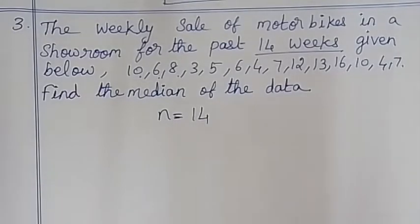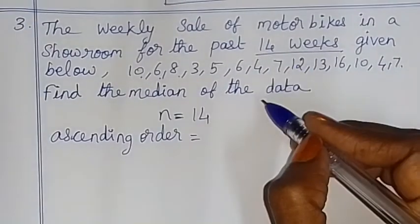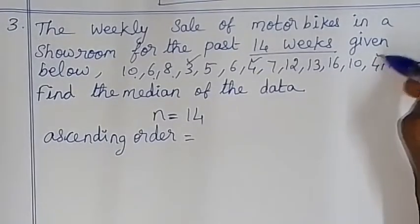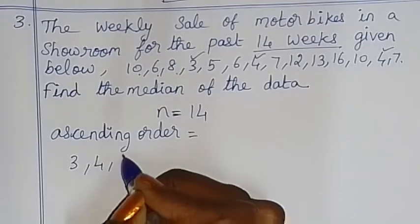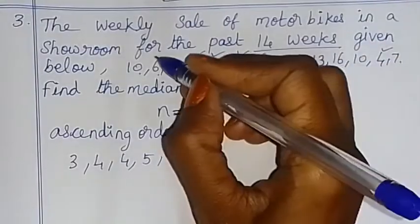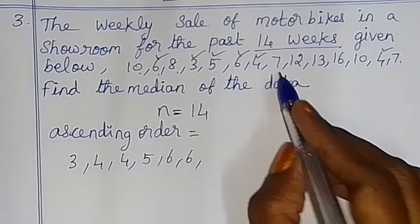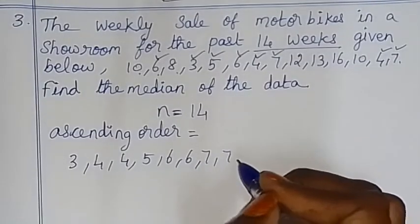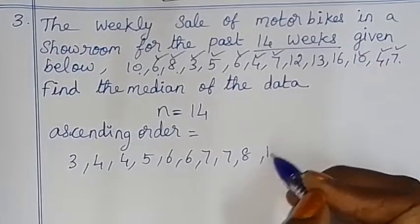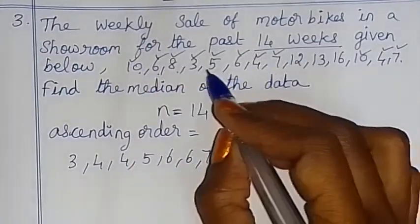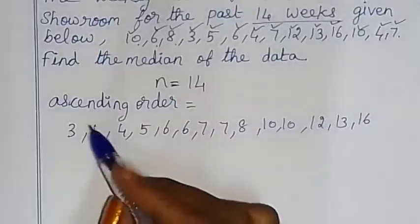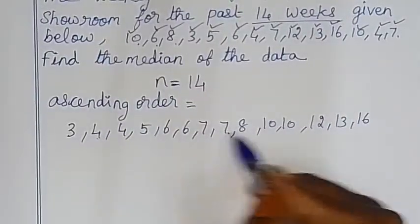First, arrange in ascending order — small to big. The data arranged is: 3, 4, 5, 5, 6, 6, 7, 7, 8, 9, 10, 10, 12, 12, 13, 14, 14, 16.